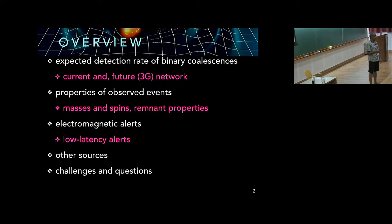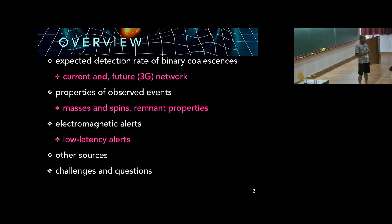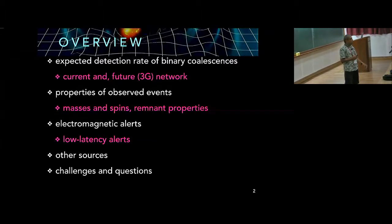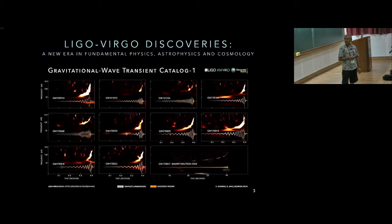Expected detection rate of binary coalescences is one of the first things that we conclude from the population that we see. Then I'm going to discuss about the properties of the observed events, and what is in store for electromagnetic counterparts now and in the future, and what other sources we can expect to observe. I conclude with a short list of questions, challenges, which we may discuss during the discussion session. I will not be able to cover all aspects, obviously, because thousands of papers have been written on the astrophysical aspects in the past three years.